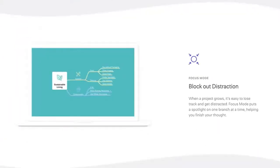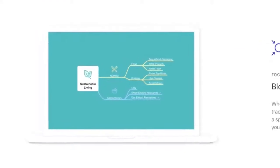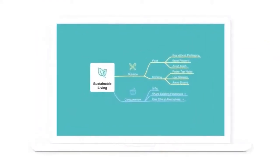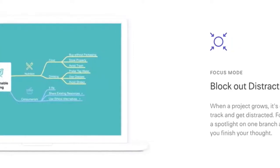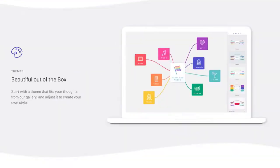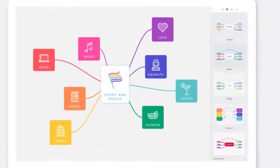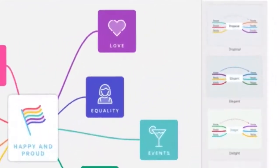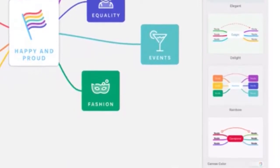Focus mode is another feature of MindNode, and this is a feature I see quite often in mind mapping tools. Essentially you get a full screen so that you can blot out any distractions when you're working on your mind map — just don't have your TV on in the background. MindNode comes with themes and, as they put it, they are beautiful out of the box. You have a bunch of pre-made, lovely-looking templates in the library that you can choose from so you don't have to start your mind map from scratch.